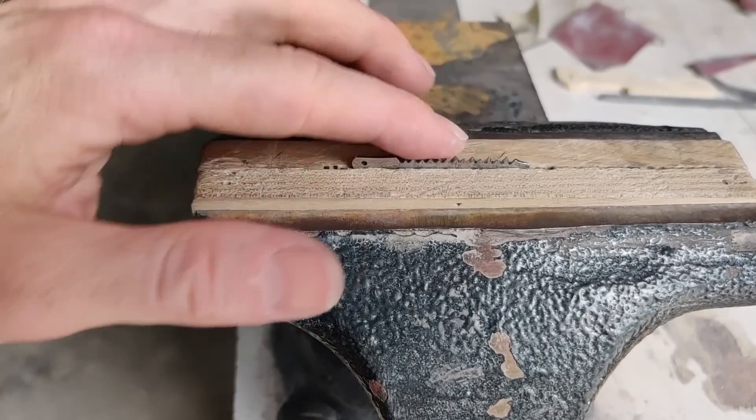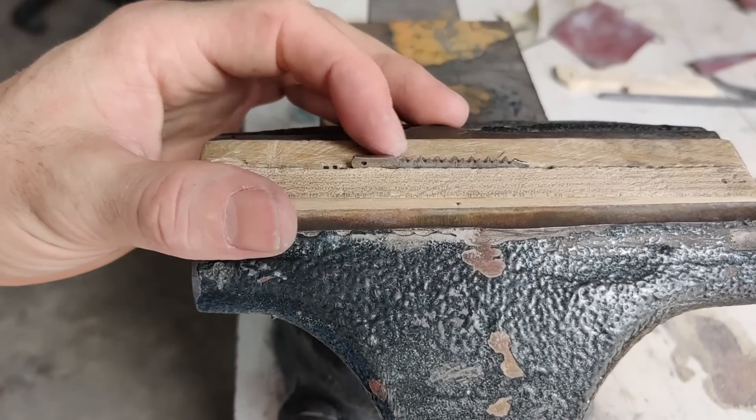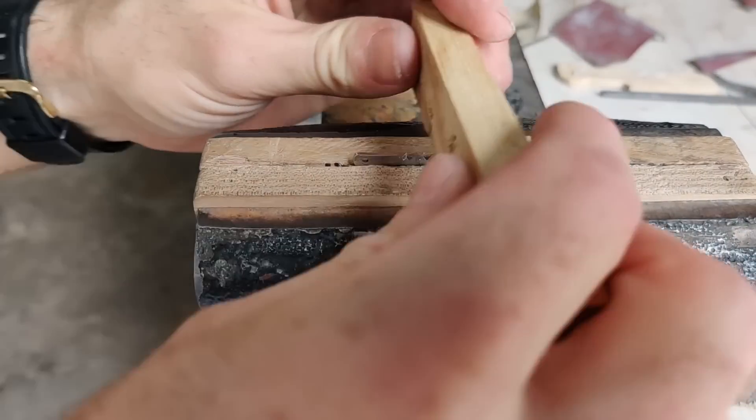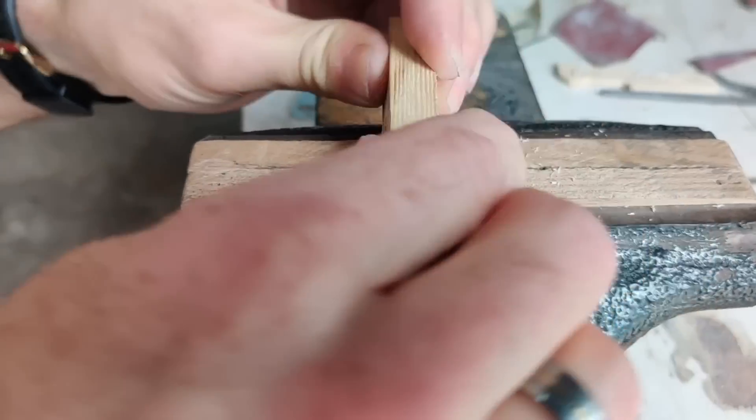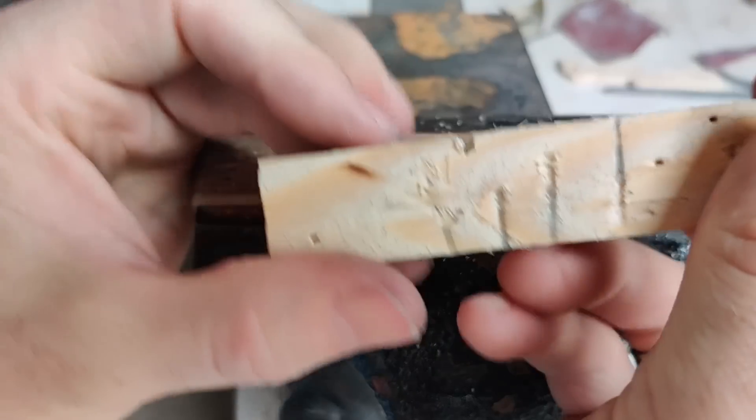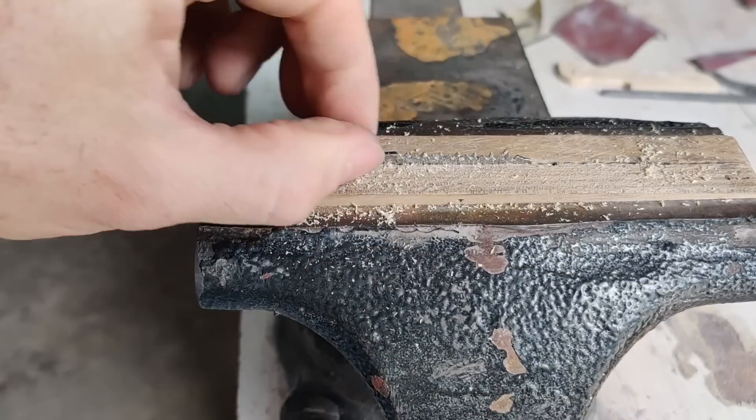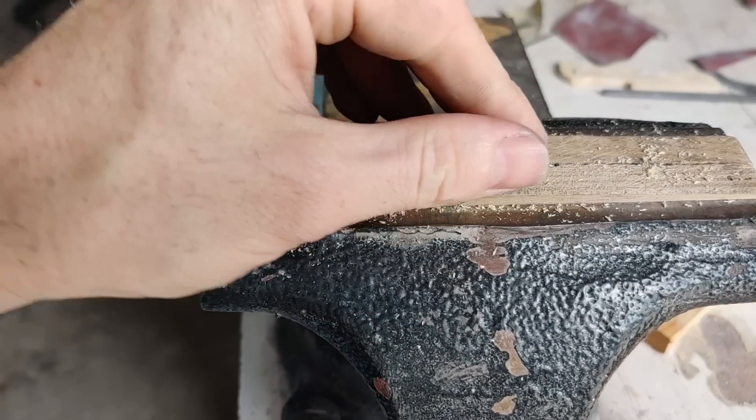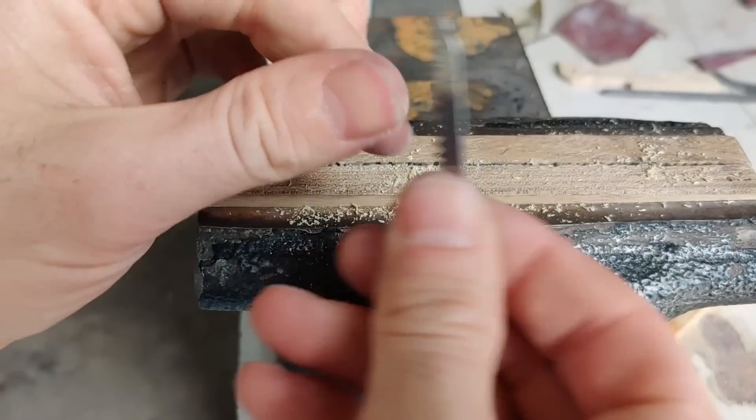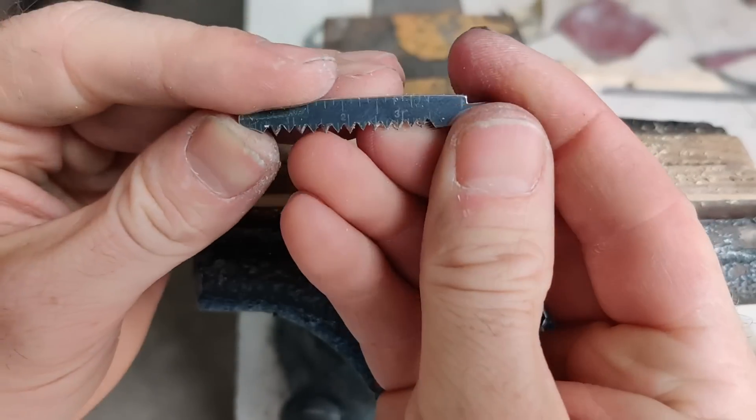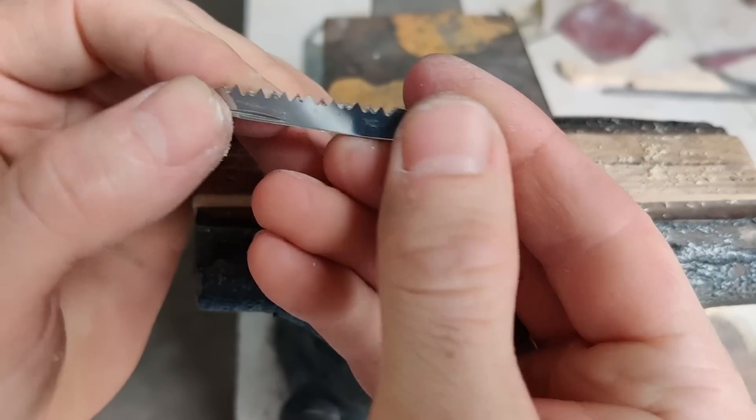Alright, so I finished up with the filing. So you can see it's got all the teeth. And so here's going to be a little test. There's a little piece of board. Just going to run it back and forth. And it cut all the way down to the next board. As you can see, this saw works. It cuts nice and well. And there we go, that's how it turned out.